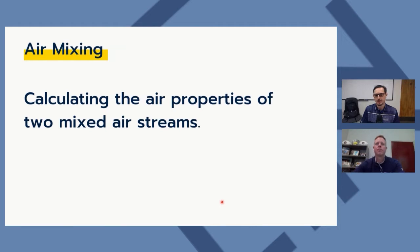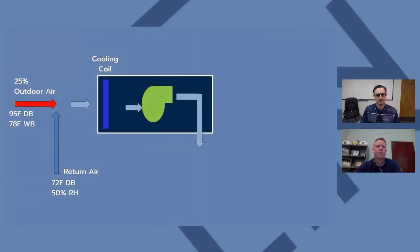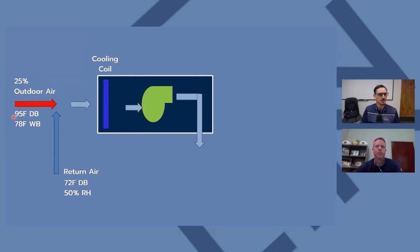Air mixing is pretty much what it sounds like — you take two airstreams and mix them together and calculate the properties of those combined airstreams. In this scenario, we have a system with 25% outside air. The design outside air condition is 95°F dry bulb and 78°F wet bulb — a humid, sweltering day in the southeast. The return air is 72°F at 50% RH.